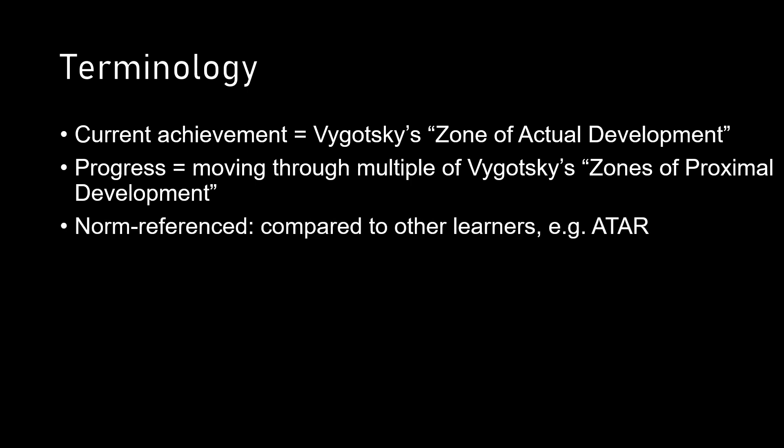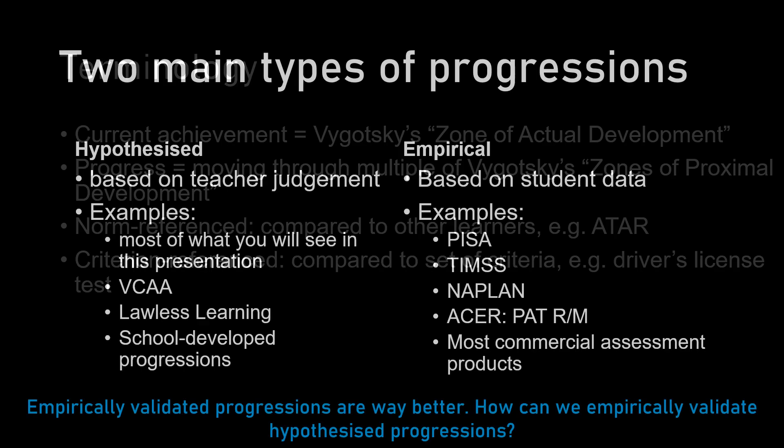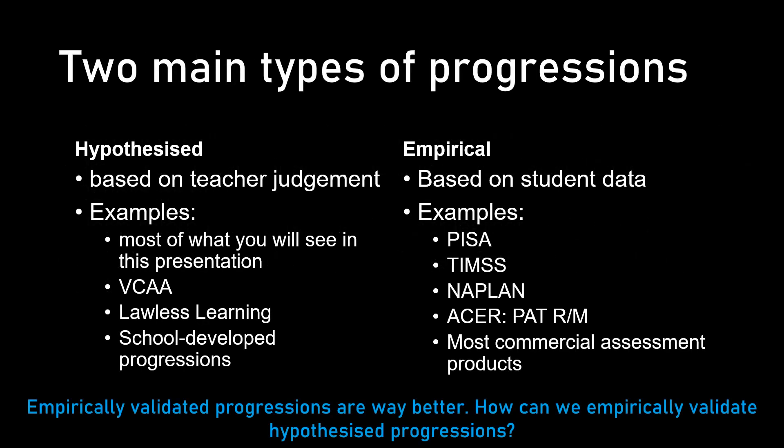I want to make a distinction between norm referencing and criterion referencing. Most curriculums and stuff that you see is based on norm referencing. What I specialize in — developmental rubrics — is criterion referencing. It's reference to what students can do, not how they compare with others. There are two types of progressions: hypothesized, which are the ones we make up, and empirical, which are big things based on massive amounts of student data. Empirical progressions are way better. So if you're making a hypothesized progression and you can validate it using data, that will make it way better.